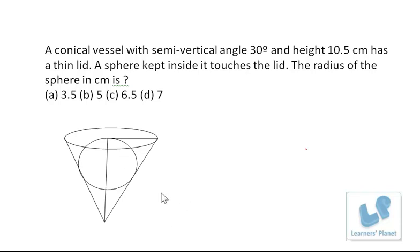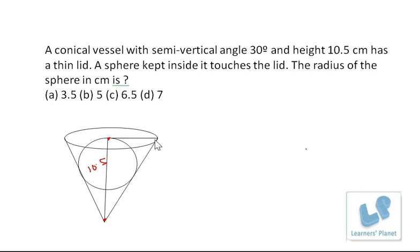I have drawn a rough diagram here. This is the cone and this is the sphere, and we have to find the radius of this sphere. This sphere is touching the lid of the cone. The height from this point to this point is given as 10.5 cm — that is the height of the cone. This is the radius of the cone, and the semi-vertical angle of 30 degrees is given.